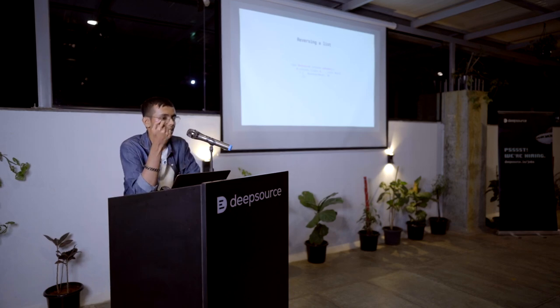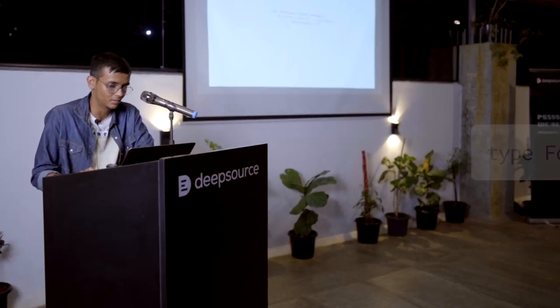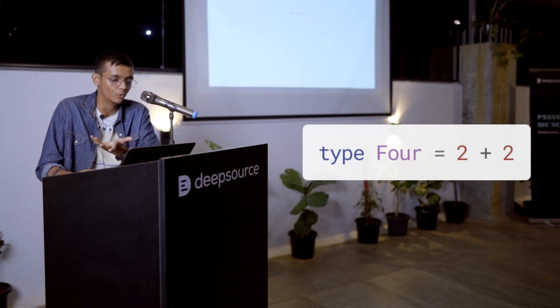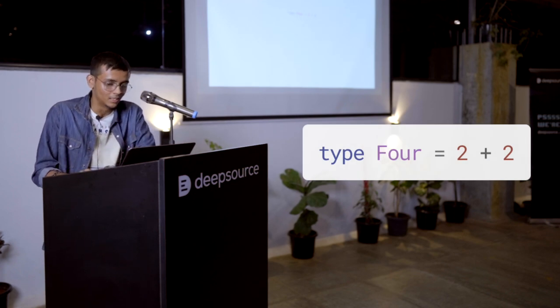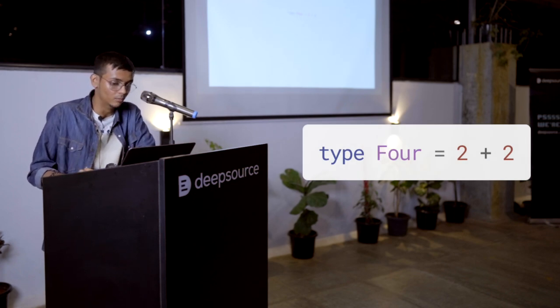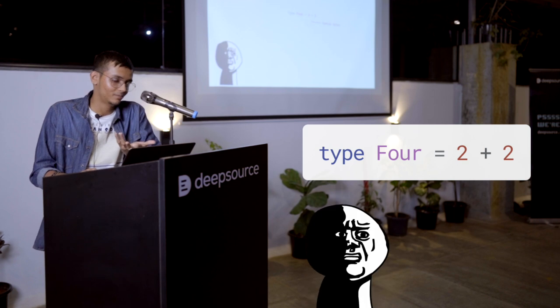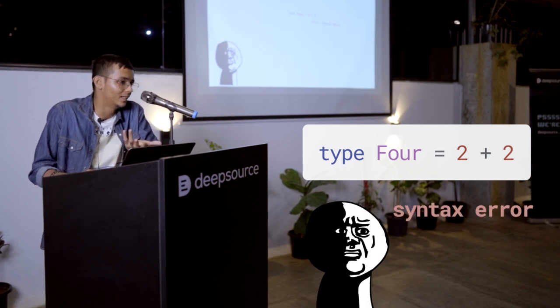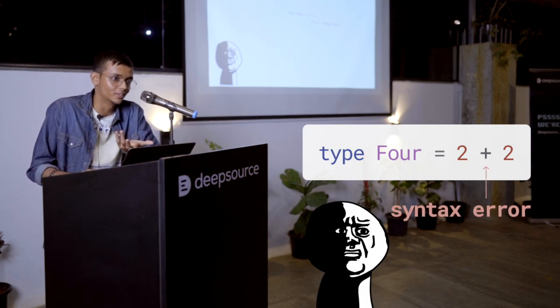If you remember, next up on our list was integer arithmetic. And integer arithmetic is easy. It's just type 4 equals 2 plus 2. That's simple. This will work. Or maybe it won't because it's a syntax error because it's not an expression.